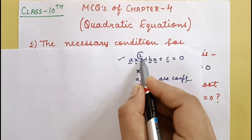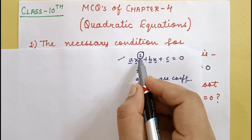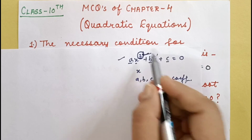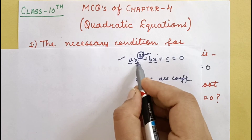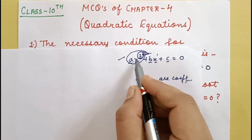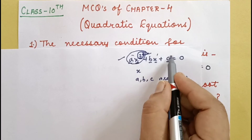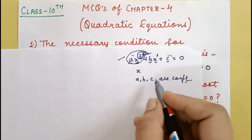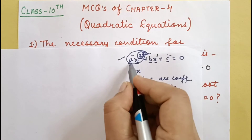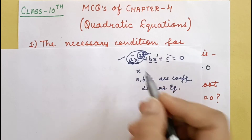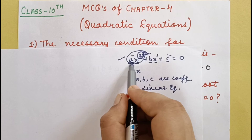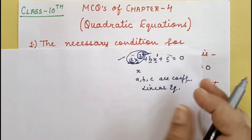Here, the power or degree of x should be maximum 2. In a quadratic equation, the variable must have power 2. Because if power 2 is not there — suppose a becomes 0 — then we're left with power 1, which is a linear equation. So in this case, the value of 'a' must not be 0.